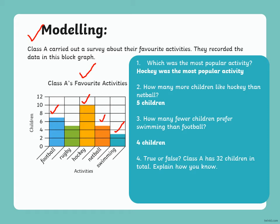Last one. Class A has 32 children in total — true or false? Explain how you know. We know that seven like football, five like rugby, ten like hockey, five like netball, and three like swimming. So it's false — there are 30 children in total.